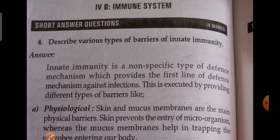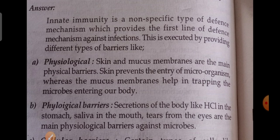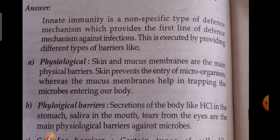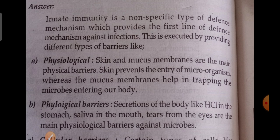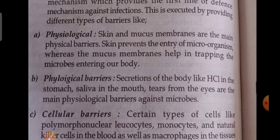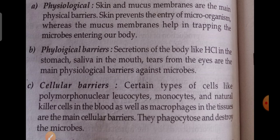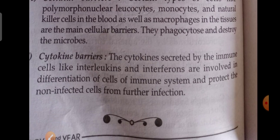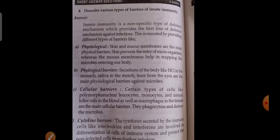Describe the various types of barriers of innate immunity. You have already studied immunity, so you can write that answer. Types of immunity: classification includes active immunity and passive immunity. Active immunity — we get it by birth. Passive immunity — by injecting immunity, or sometimes by following good habits or taking a good diet. Physiological and cellular barriers can also be written. Write a related answer; don't write a wrong answer.